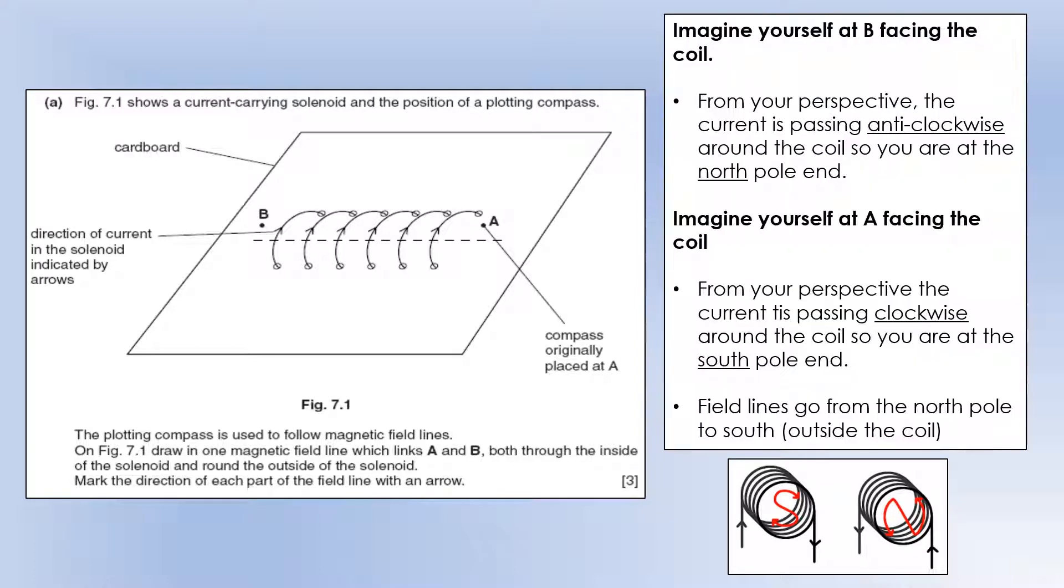So imagine yourself sitting at B looking at the coil. From your perspective, you would see current going around anti-clockwise. And that means you are sitting at the north pole end of the solenoid. It's a really useful rule to use. If you were at A facing the coil, it would look to you like current was going round clockwise. So you are at the south pole end.